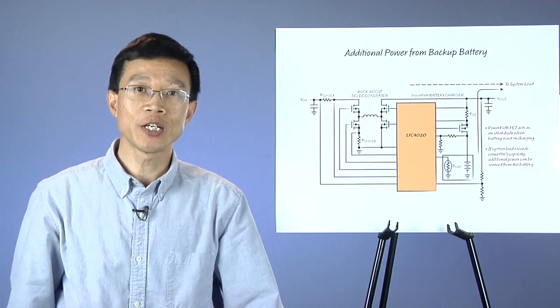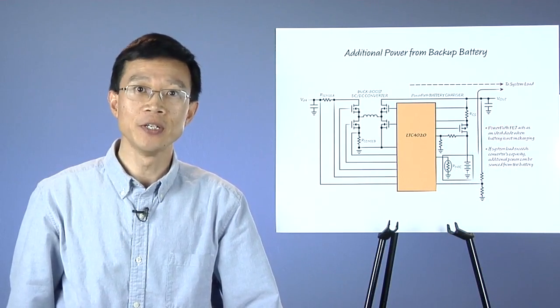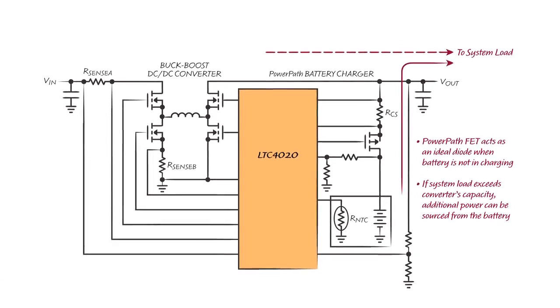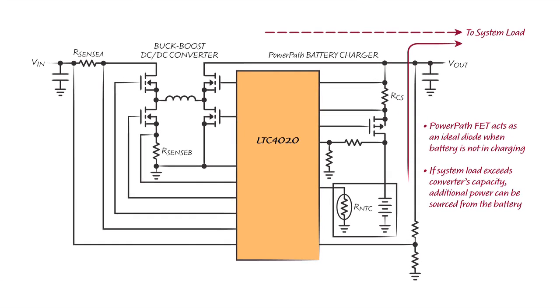When the battery charger is not in a charging cycle, the LTC4020 automatically configures the power pass FET as an ideal diode. This allows the battery to remain disconnected from the converter output in normal operation.